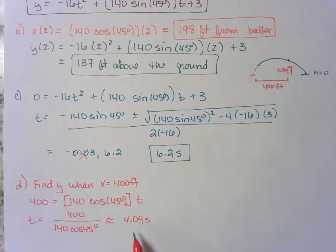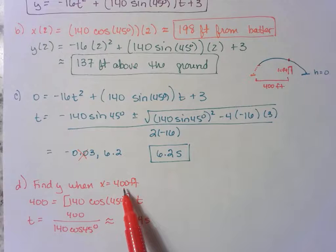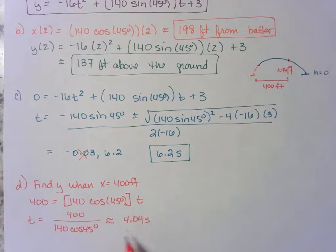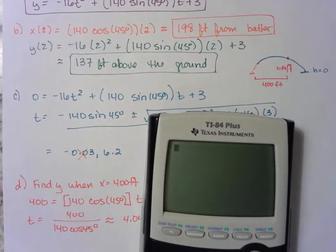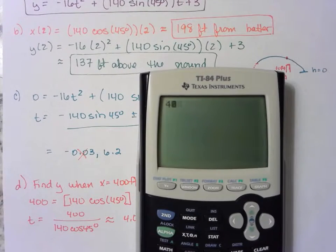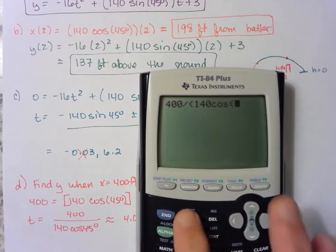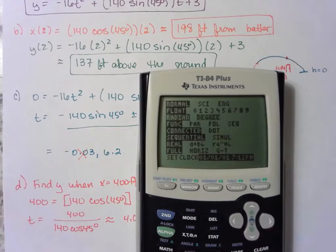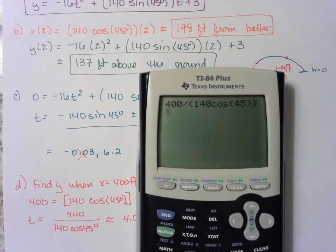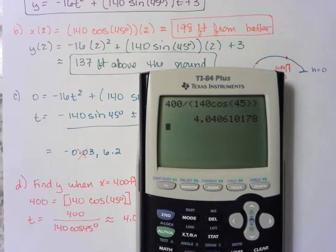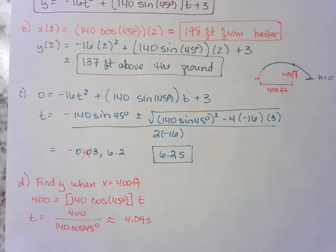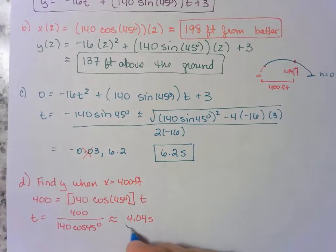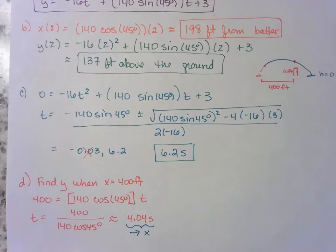It takes 4.04 seconds for the ball to travel 400 feet. Now in my calculator, I just saved this. I'll show you so we don't get confused. So we have 400 divided by 140. Oops, I forgot I changed the degrees. Cosine 45. I have this number. I'm just going to store it in x. That way, I don't have to think about this anymore. I stored this in x in my calculator.